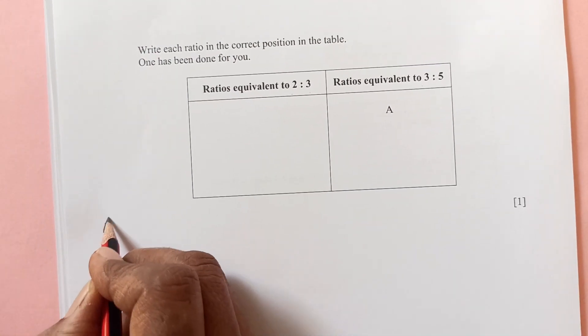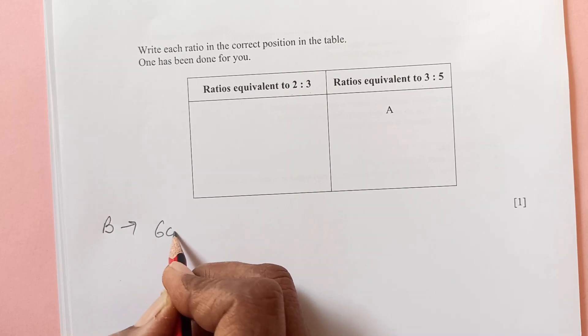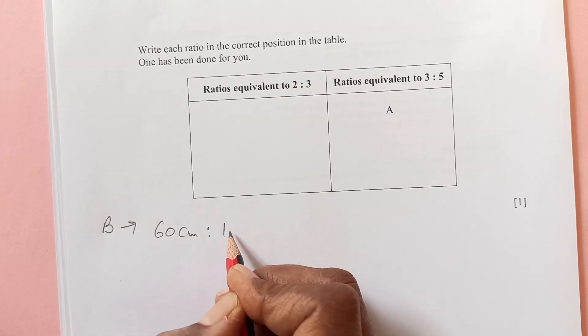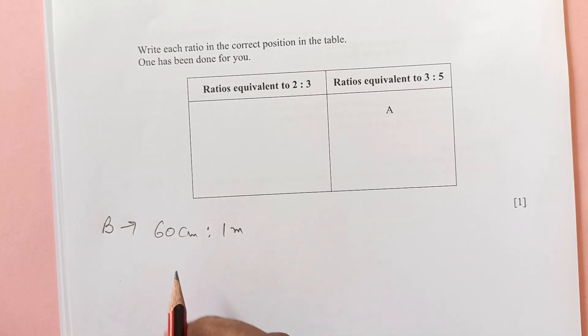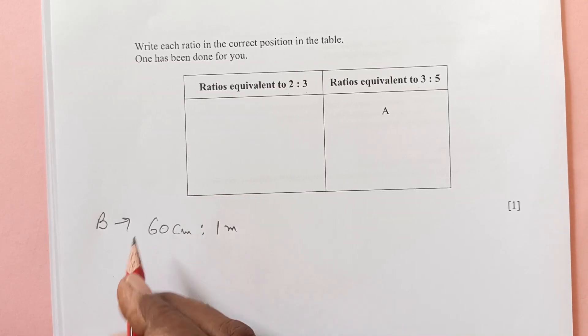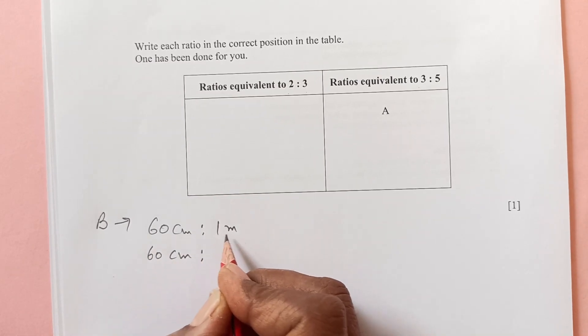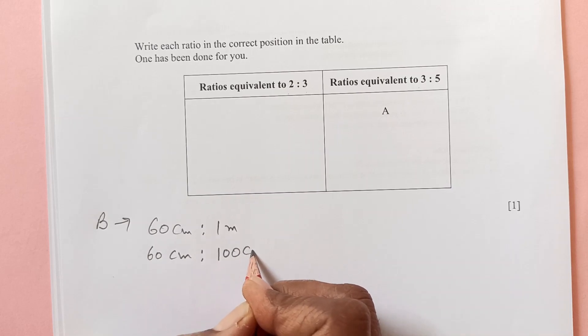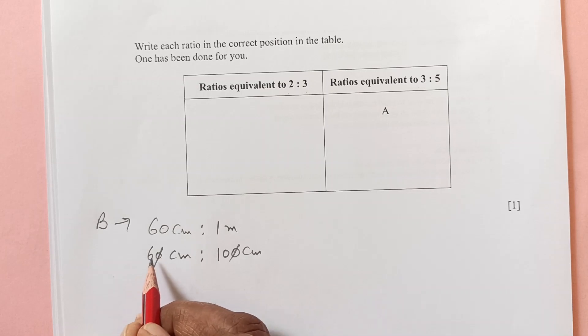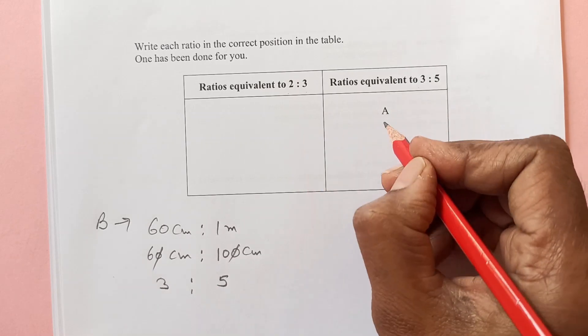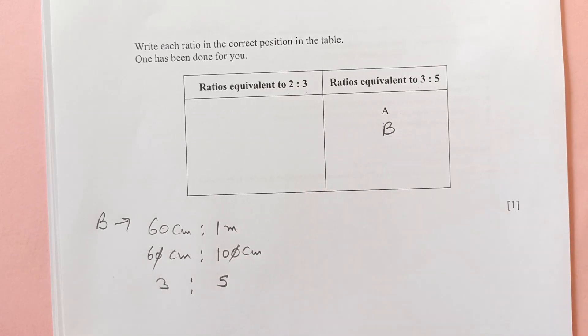Let's do the calculation for B. B is 60 centimeters ratio 1 meter. Make sure that your unit is equal, so 1 meter is 100 centimeters. 0 and 0 is cancelled, divide by 3, divide by 2. It is 3:5, so B is going to be this side.